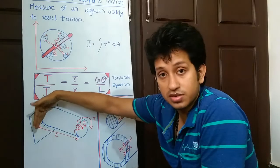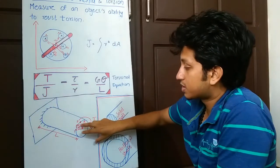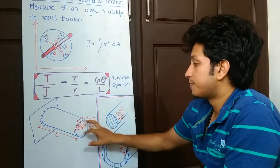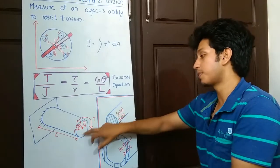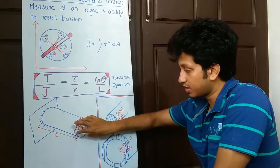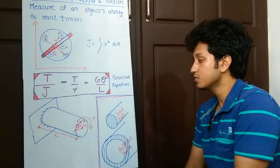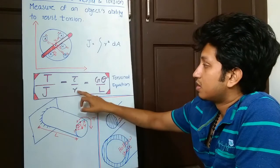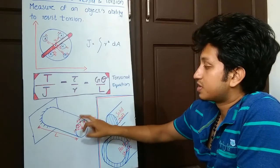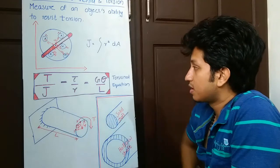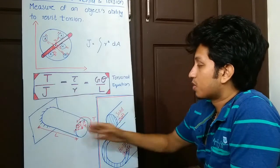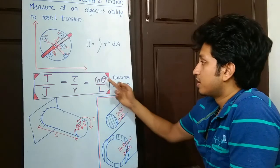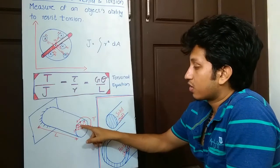The same way, this shaft is fixed on this plate and we're applying torque T to shear it. We're applying torque so this will get deformed. r is the radius of the shaft, tau is the maximum shear stress withstandable by the material, T is the torque, J is the polar moment of inertia of the shaft, and G is the modulus of rigidity.